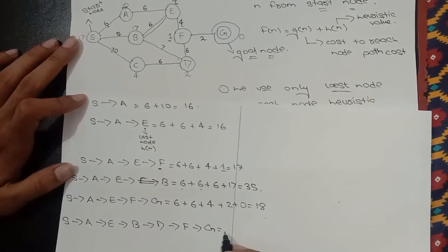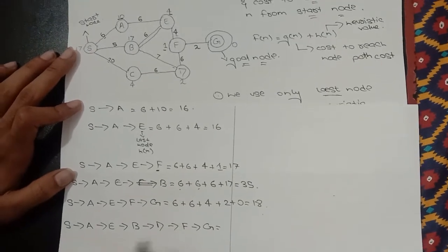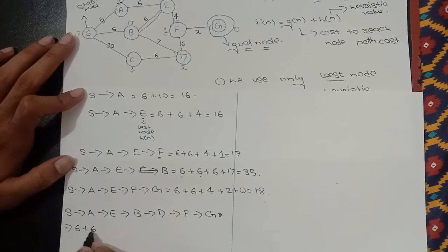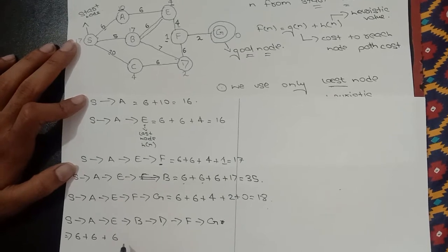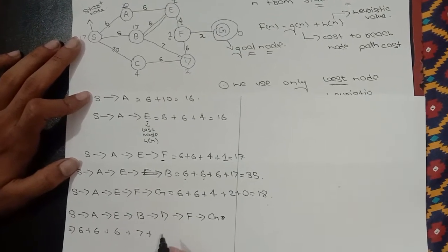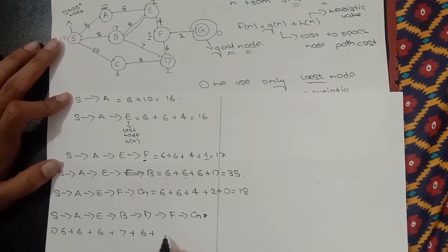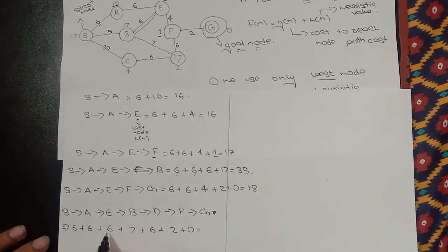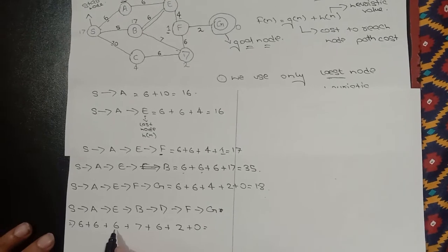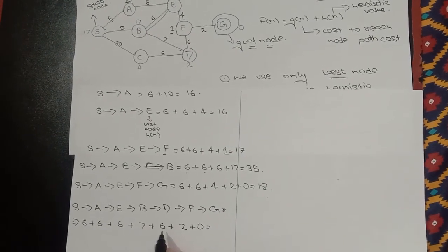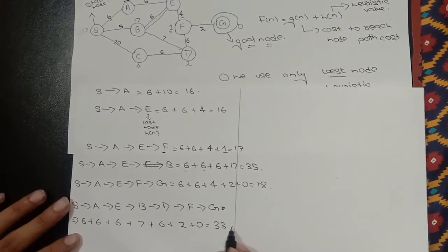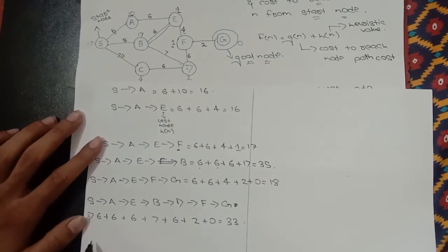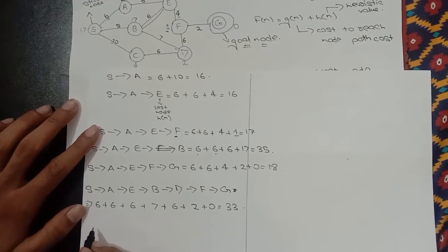Another path: S to A to E to B to D to F to G. The value is: 6 plus 6 plus 6 plus 7 — remember B to D distance is 7 — plus 6 plus 2 plus 0, which equals 33.